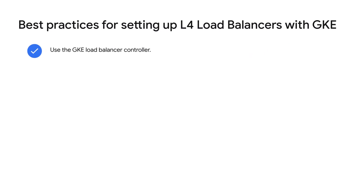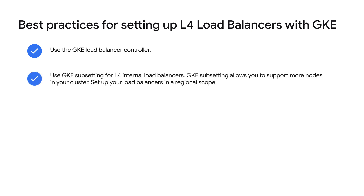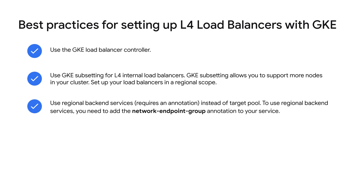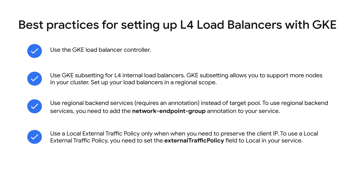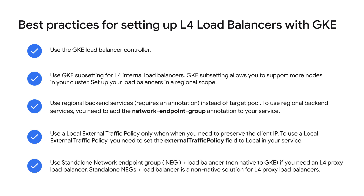The first best practice for a Layer 4 load balancer is to use a GKE load balancer controller. Use GKE subsetting for Layer 4 internal load balancers; however, it is not available by default and must be used as an add-on. Next, use regional backend services which require an annotation instead of a target pool, as regional load balancers are more scalable and resilient than zonal load balancers. Use a local external traffic policy only when you need to preserve the client IP. Use standalone network endpoint groups plus load balancer if you need a Layer 4 proxy load balancer — create a network endpoint group and associate it with a load balancer.